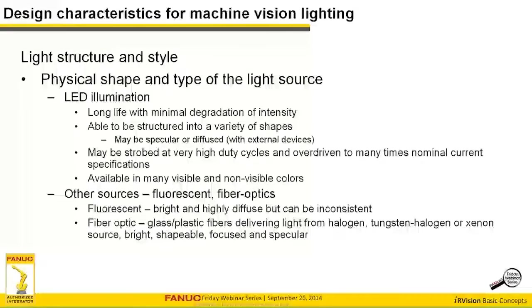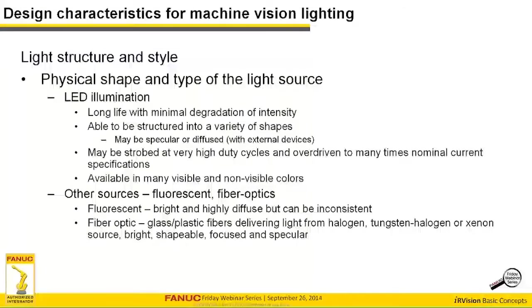Other light sources include fluorescent, which is super bright and highly diffuse, but inconsistent — it loses intensity quickly within the first couple thousand hours and completely goes out after about 3,000 hours, potentially needing monthly replacement. Fluorescent lights also have three peaks of light — red, green, and blue — which is not conducive to many machine vision applications. Fiber optic, tungsten halogen, and xenon are used more consistently in machine vision inspection applications.